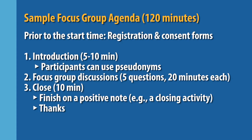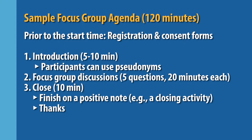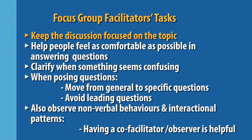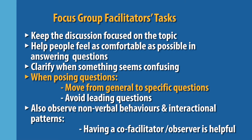A focus group can start with introductions. You may want to give participants the option to use pseudonyms if the topics discussed are sensitive. For focus groups that will be two hours long, consider having about five main questions so that you can spend about 20 minutes per question. This could vary by the nature of questions, group composition, and other variables. You should also leave some time at the end to finish the group on a positive note — for example, I may ask each participant to say or write a word or phrase to describe how their experience was. When posing questions, it's a good idea to move from general to specific questions and avoid reading questions.